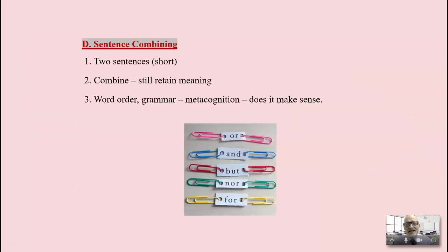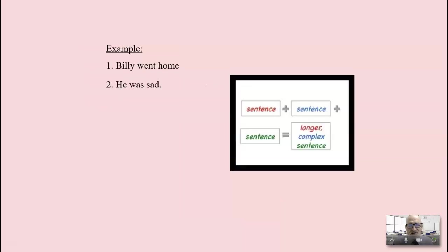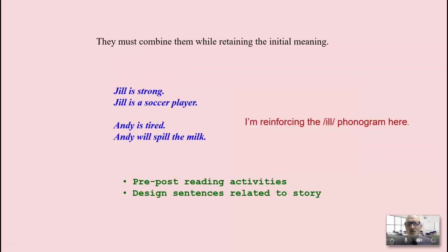Sentence combining. Keep it short again. You have to combine two sentences and retain the meaning of both. Grammar and word order but metacognition. Does this sentence make sense? For example, Billy went home. He was sad. They have to combine them. Billy was sad and he went home. And retain the meaning of each grammar in word order. This is a very strong research-based strategy for teaching grammar.